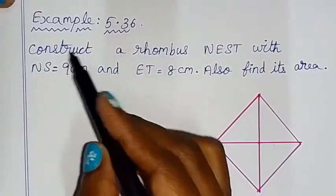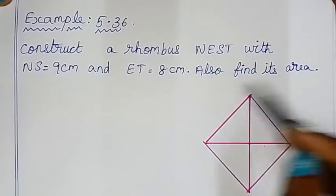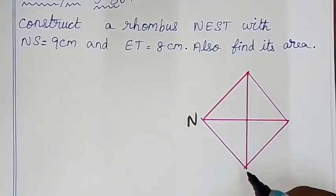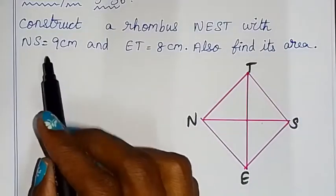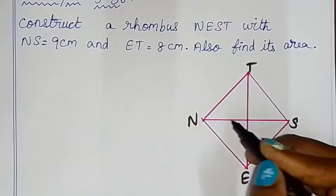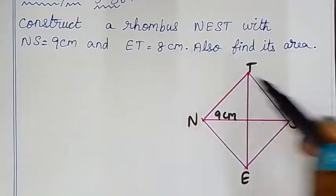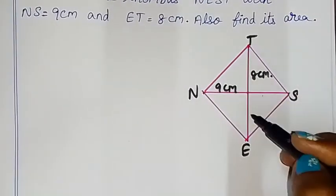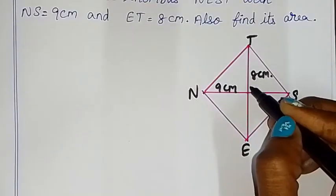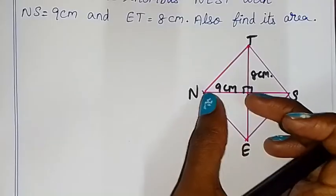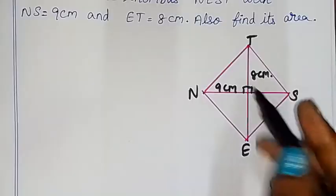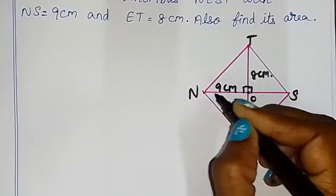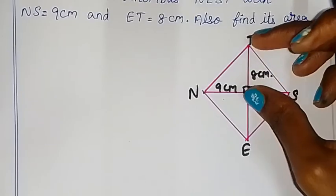Example 5.36: Construct a rhombus NEST with given measurements. Also find the area. Draw a rough diagram and label vertices N, E, S, T. The measurements are: diagonal NS equals 9 cm and diagonal ET equals 8 cm. Since diagonals of a rhombus bisect each other at 90 degrees, NS is divided into 4.5 cm and 4.5 cm, and ET is divided into 4 cm and 4 cm.